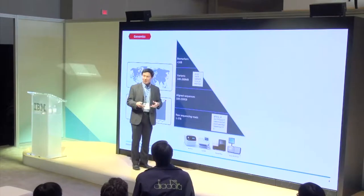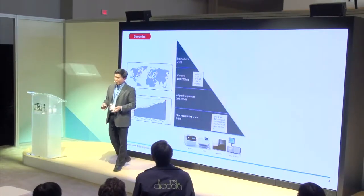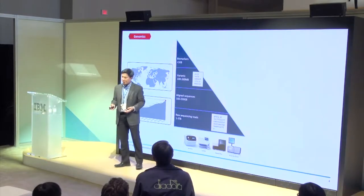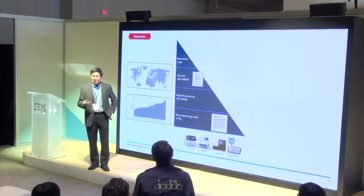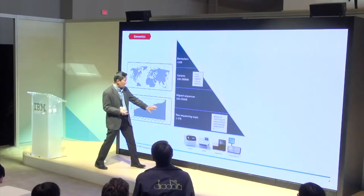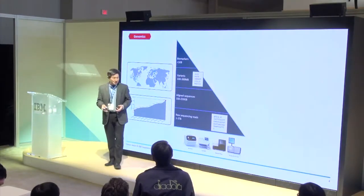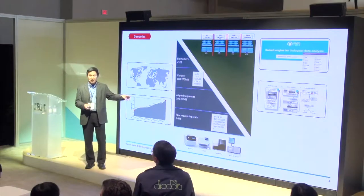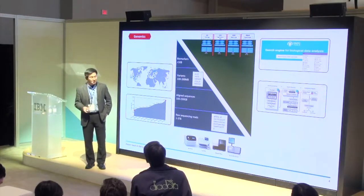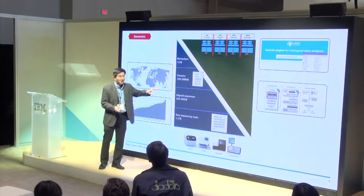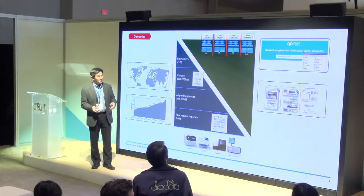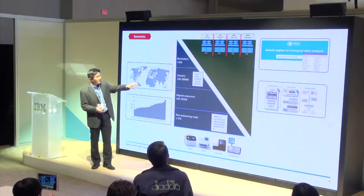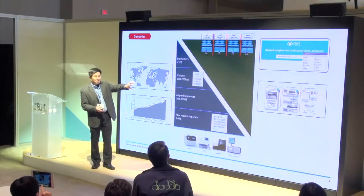The variants are analyzed again into actionable information and insights — we call these biomarkers. In the case of clinical treatment, you can pass them to genetic counselors to make clinical reports. This whole process generates tons of data. On the reverse side is the complexity of the application: you have applications that process data, analyze data, and eventually interpret data — data gets reduced and simplified, yet the application becomes more complex.